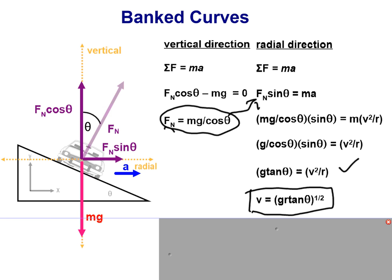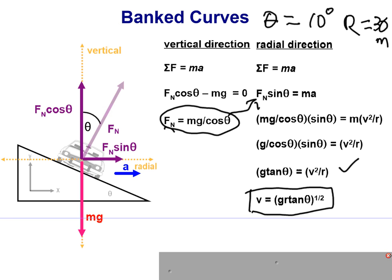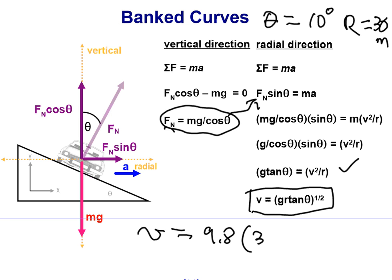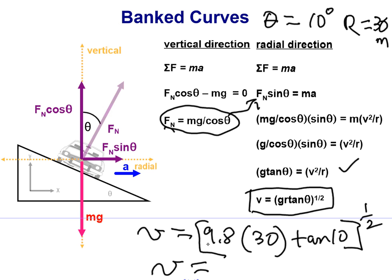For example, supposing that the angle of the plane is 10 degrees and the radius is equal to 30 meters. The question is, how fast can we go on this particular hill? Just plugging in the values, the velocity is going to equal the square root of g times r times the tangent of 10 degrees - that's the square root of 9.8 times 30 times tangent of 10 degrees. If you do the calculations, you will find that the velocity is 2.3 meters per second.